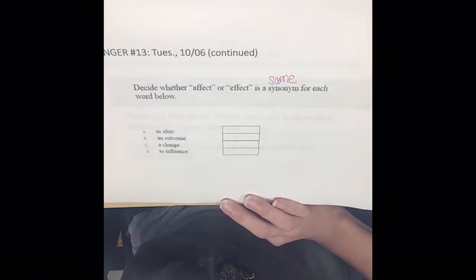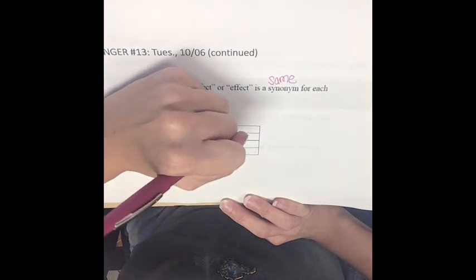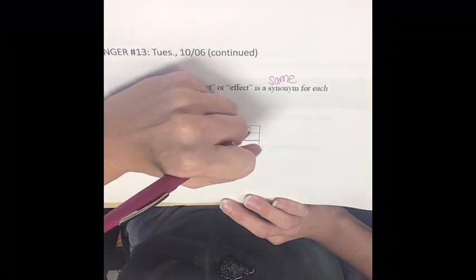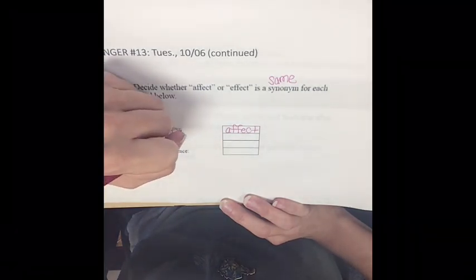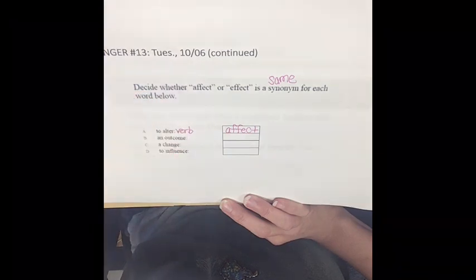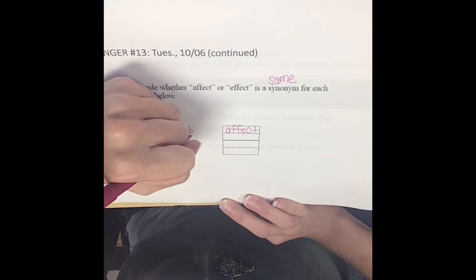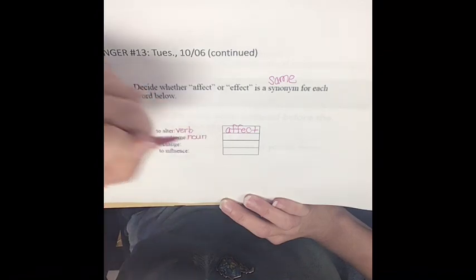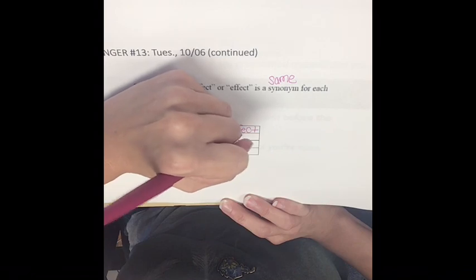To alter. To alter means affect with an A. An outcome — we're looking for the noun — effect with an E.